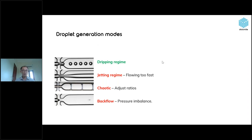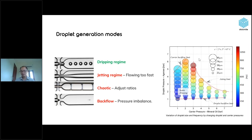The droplet generation mode is also very important for microparticle generation. Normally you can generate droplets in the dripping region by adjusting the flow rate ratio. However, at high flow rates you can achieve the jetting region where laminar flow forms between the two streams, and droplets will not form. By adjusting the ratio, you can also achieve a transition, and if the pressure is imbalanced, backflow will occur — an unwanted process during microparticle production. You should always select conditions in the stable dripping region, not near any boundaries such as the jetting limit, carrier backflow, or droplet backflow limits.